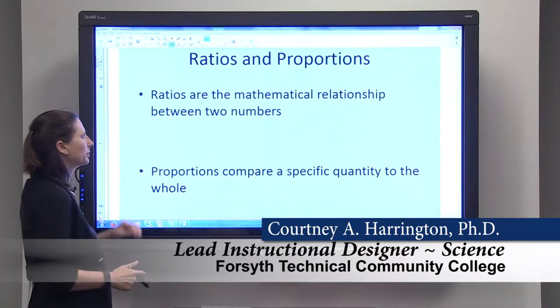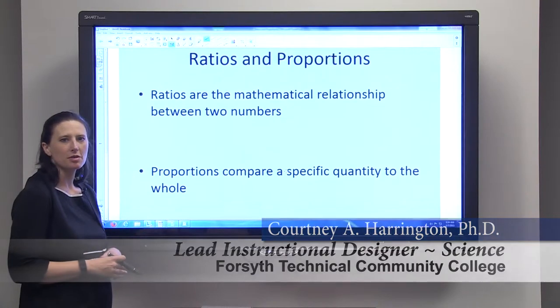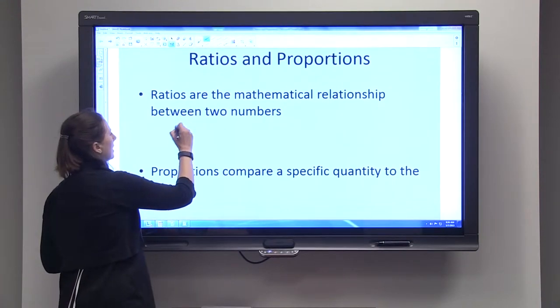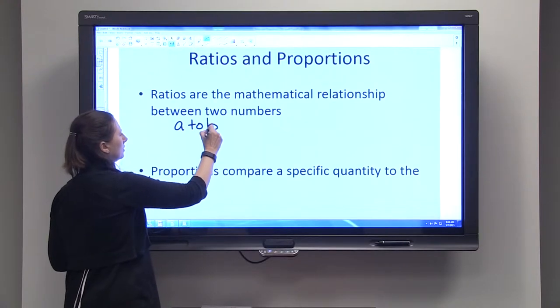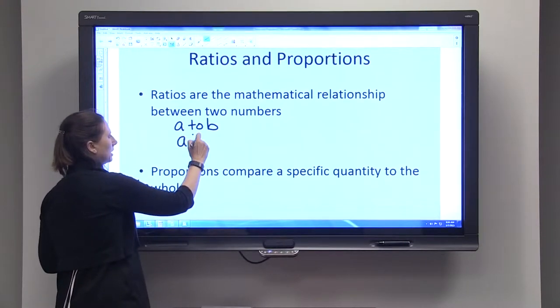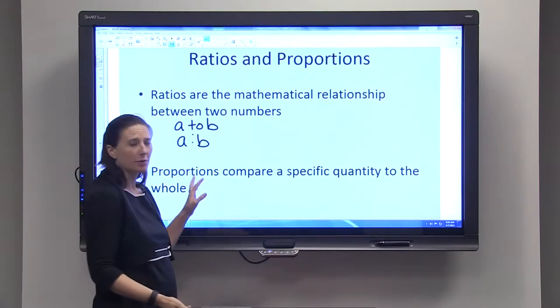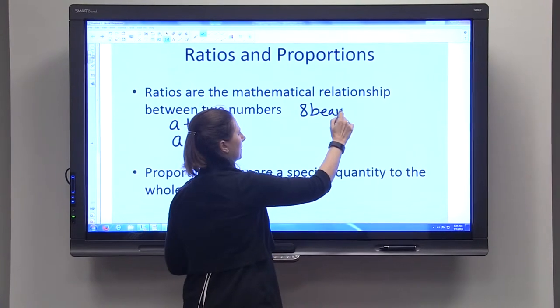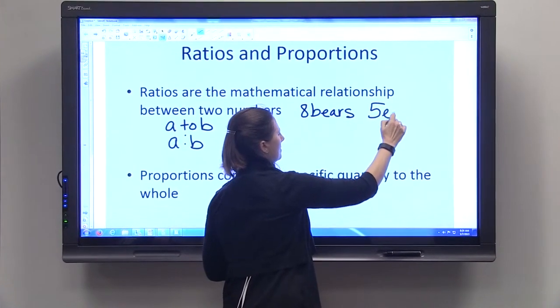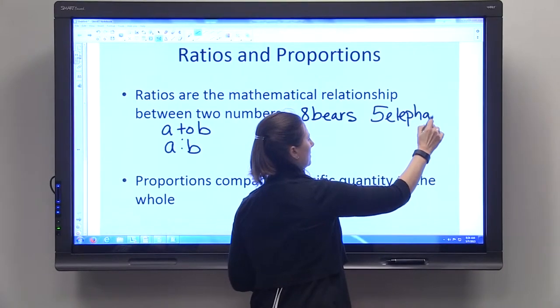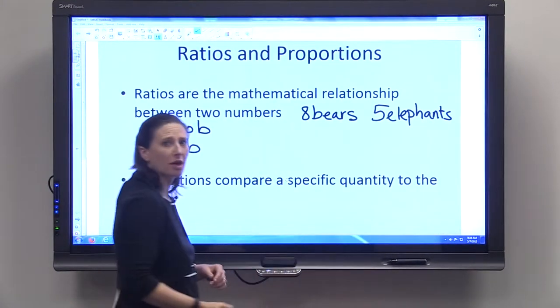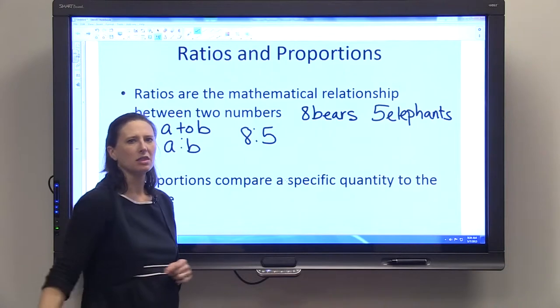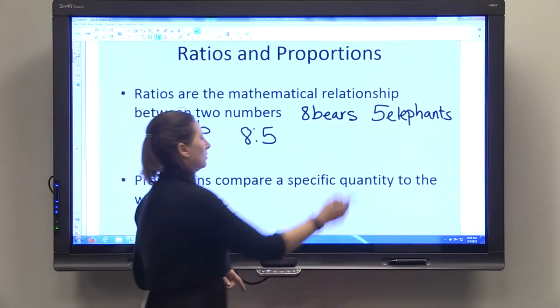Today we're going to talk about ratios and proportions. Ratios are the mathematical relationship between two numbers, usually expressed as a to b or written a colon b. For example, if we had 8 bears and 5 elephants, the ratio of bears to elephants would be 8 to 5, and the ratio of elephants to bears would be 5 to 8.